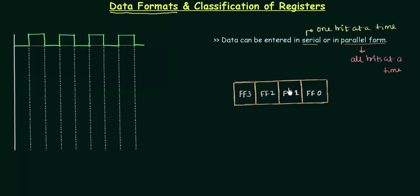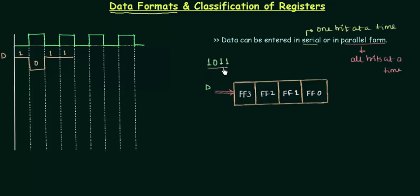If this is the register, the data can be entered in serial form — one bit at a time. For example, if I want to enter 4-bit data 1011, in serial form D is the data entered one bit at a time. In parallel form, the data is entered individually to all four flip-flops: this one is 1, this is 0, this is 1, and then 1. So this is the parallel form and this is the serial form — entering 1011 in both ways.